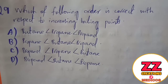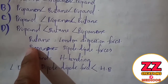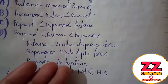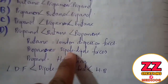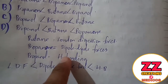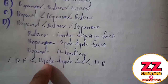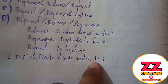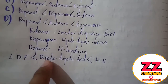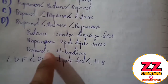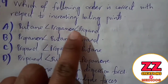Next question: Which of the following gives the correct order with respect to increasing boiling points? Intermolecular forces determine boiling point. The trend to remember: London dispersion forces are weakest, followed by dipole-dipole forces, then hydrogen bonding which is strongest. Butane has London dispersion forces, while propanol has hydrogen bonding. So butane has the lowest boiling point, and propanol has the highest. Option A is correct.